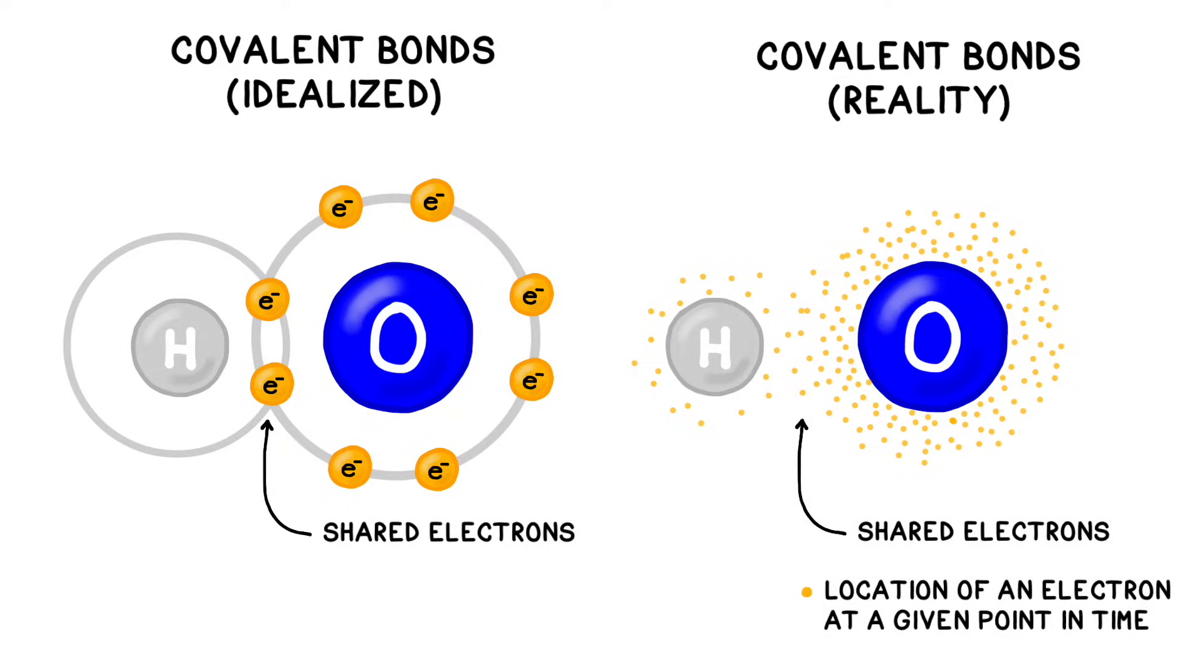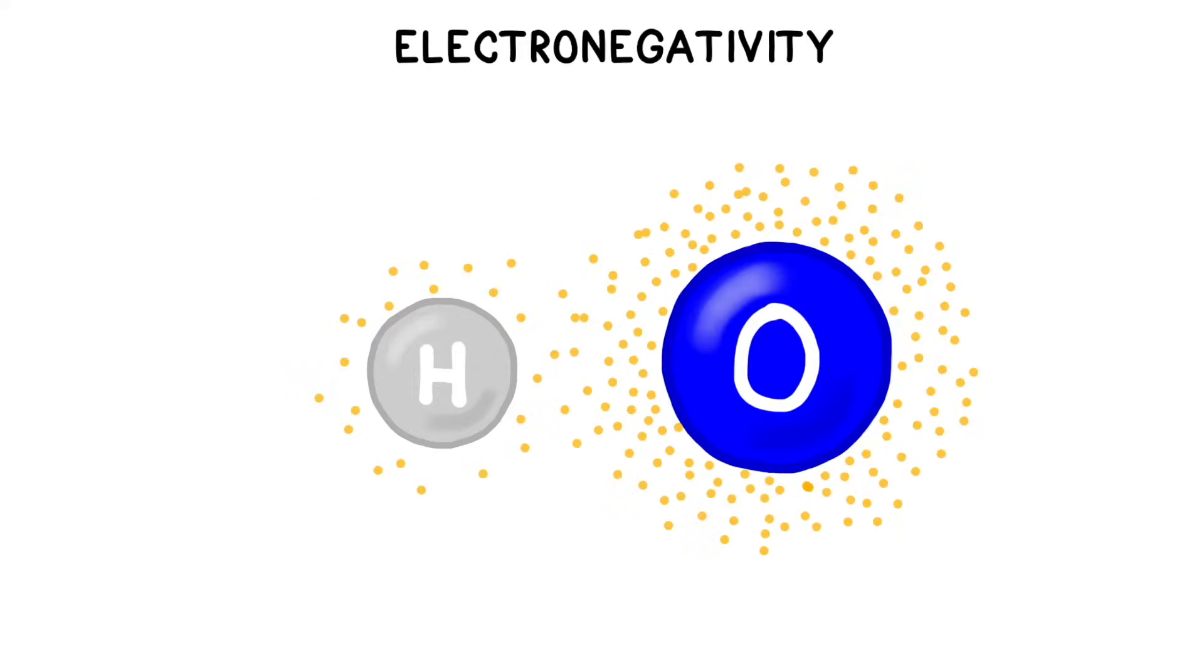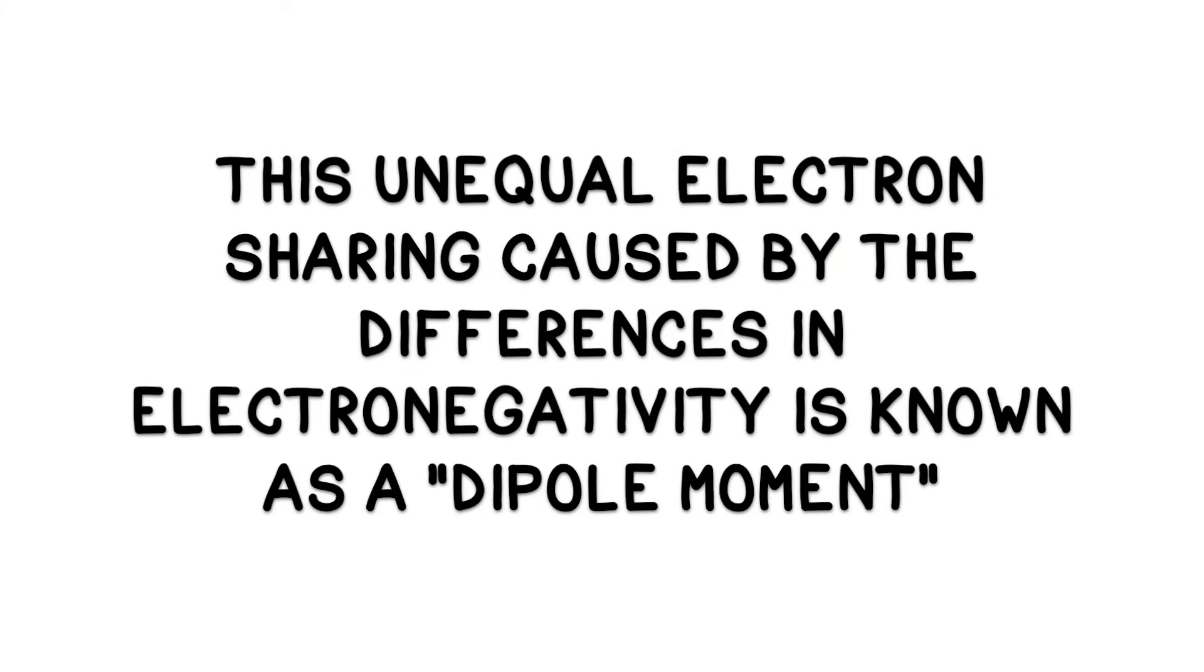But overall, the electrons in the covalent bonds of a water molecule spend more time closer to the oxygen than they do to the hydrogens. This is because oxygen has a higher tendency to attract electrons, a property that we call electronegativity. This unequal electron sharing, caused by the electronegativity differences, is known as a dipole moment.